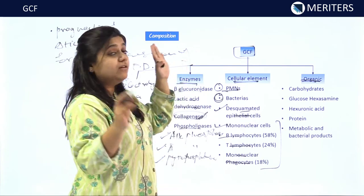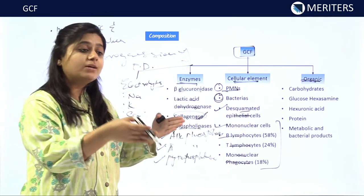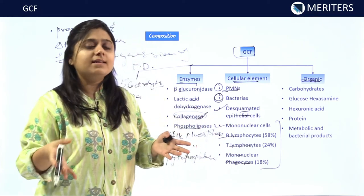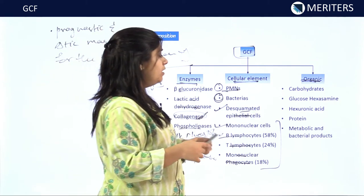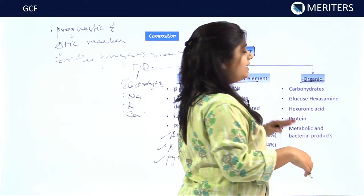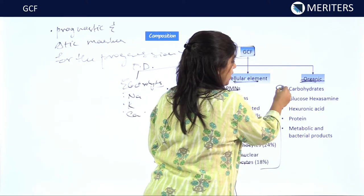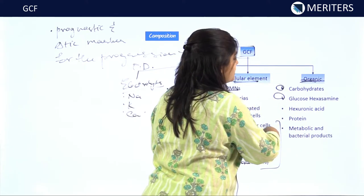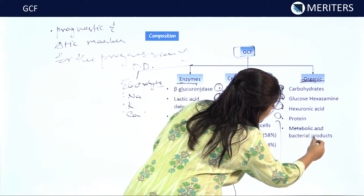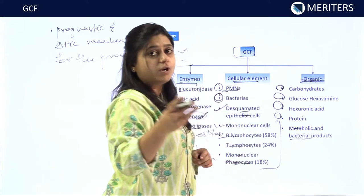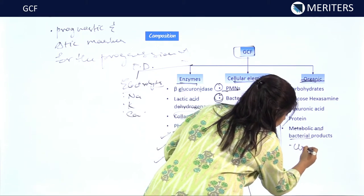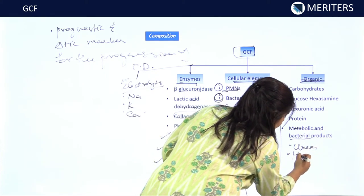From these cellular elements, we can determine the progression of the disease — whether periodontal disease is in an active condition or has subsided. The organic components included in GCF are carbohydrates, glucose, hexosamine, hyaluronic acid, protein, and metabolic products from bacteria. Bacterial metabolic products include urea, hydroxyproline, lactic acid, formic acid, and ammonia.